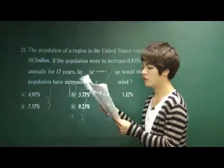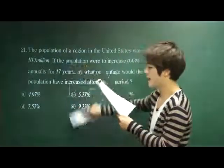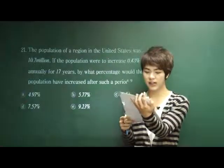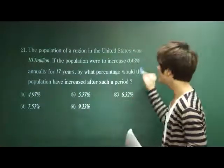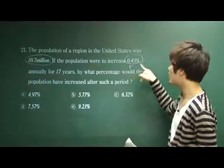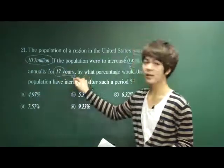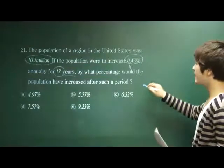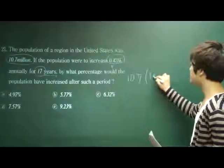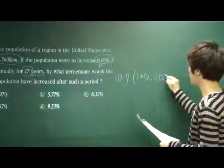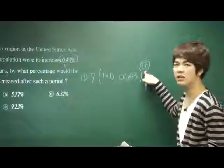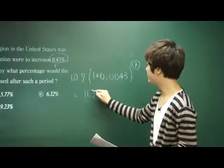Let's move on to number 21. The population of a region in the United States was 10.7 million. If the population were to increase 0.43% annually for 17 years, by what percentage would the population have increased? We can find the population after 17 years by calculating 10.7 million times (1 plus the rate of increase, which is 0.0043) to the 17th power, because it has increased for 17 consecutive years. That equals approximately 11.51 million.